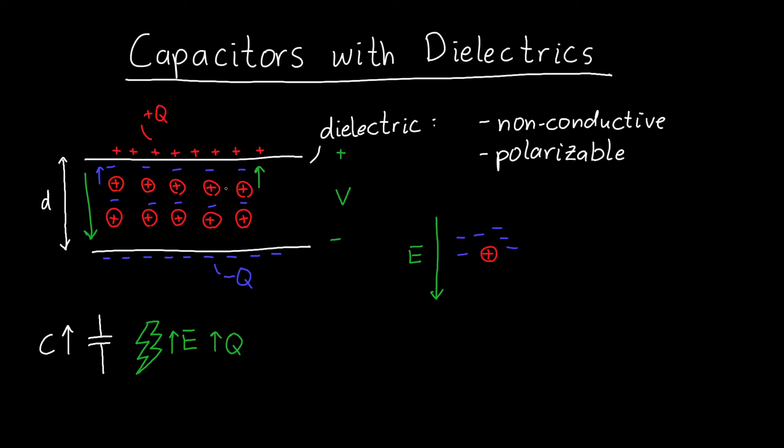We can call it an internal electric field. And that's pointing in the opposite direction of the external electric field, due to the charge on the top plate and the charge on the bottom plate.